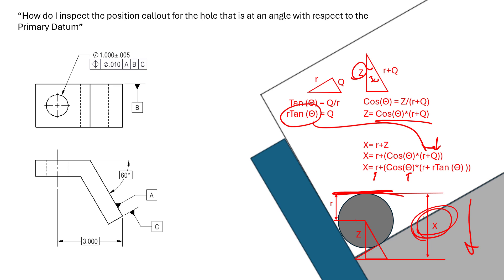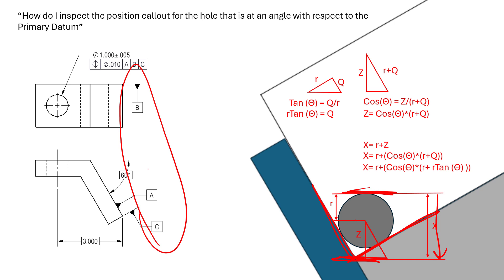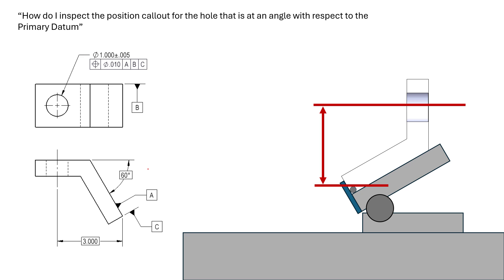If you have access to CAD software this becomes much easier — you just draw it up and read it out — but this trig approach is handy to have in the inspection process. You only need to calculate this once: say, 'I'm using a 0.5 gauge pin, so I need to offset by this value.' Put it in your inspection notes; you don't have to redo it every time. So we zero our height gauge off the pin, then move down this nominal offset value we calculated and re-zero, giving us our zero-zero-zero defined by A, B, and C.